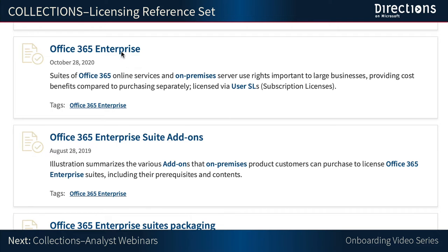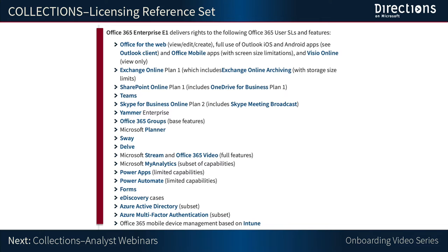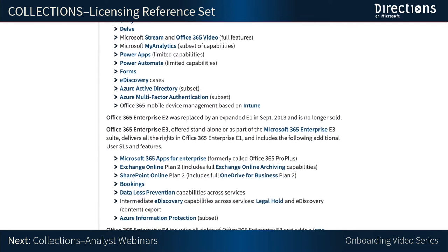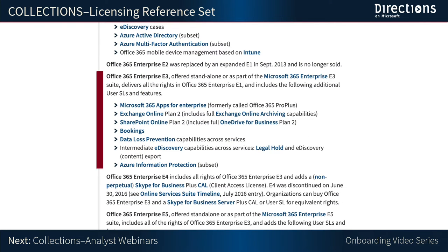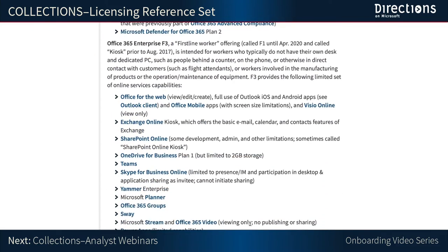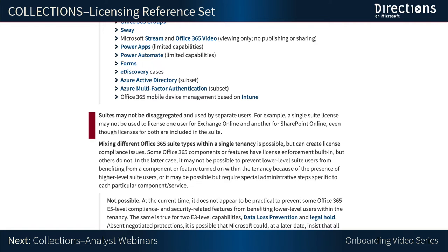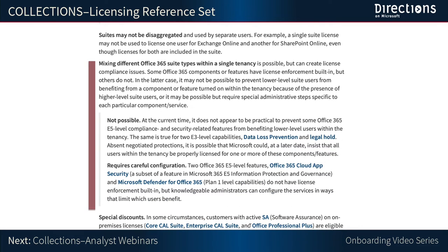Here on one page, you'll quickly get a clear understanding of what is in the E1 suite, and additional capabilities in the E3 suite, even more capabilities in the E5 suite, and the capabilities delivered with the F3 or First Line Worker suite. If you don't know what something is, click through to it and you will find out right away. You will also find answers to commonly asked questions such as: Can suites be disaggregated? Should we mix Office 365 suite types within a single tenancy?